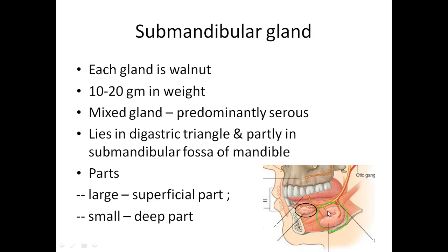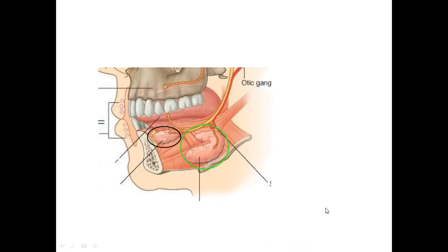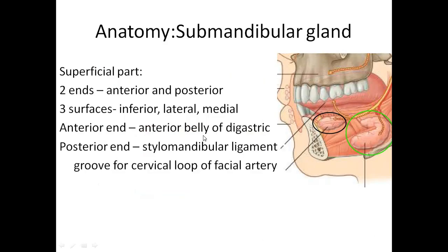From the deep part arises the duct — the submandibular salivary duct, also called Wharton's duct. If you remove the deep part, it is as good as removing the whole gland, because all the duct system of the superficial part passes through this deep part to reach the submandibular duct.